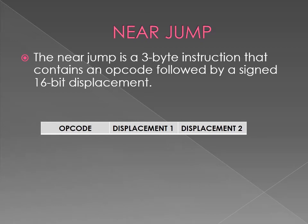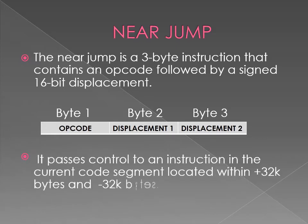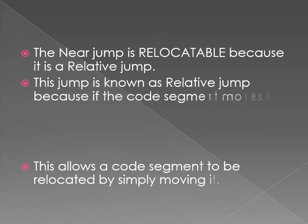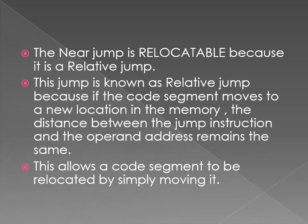The near jump is a 3-byte instruction that contains an opcode followed by a signed 16-bit displacement. Byte 1 contains the opcode. Bytes 2 and 3 together contain a displacement of 16 bits. It passes control to an instruction in the current code segment located within plus or minus 32K bytes. The near jump is relocatable because it is a relative jump. This jump is known as a relative jump because if the code segment moves to a new location in memory, the distance between the jump instruction and the target address remains the same, allowing the code segment to be relocated by simply moving it.